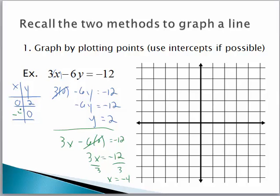X equals negative 4 when y equals zero. So I plot those two points: negative 4, 0 and 0, 2. And I have my line.